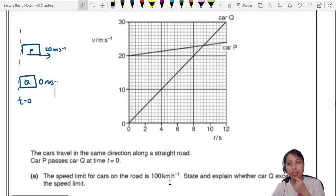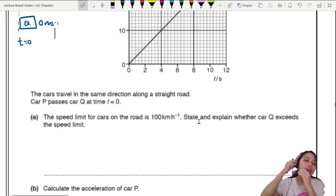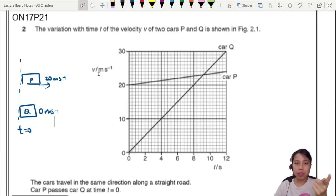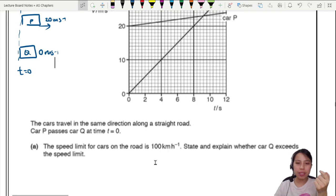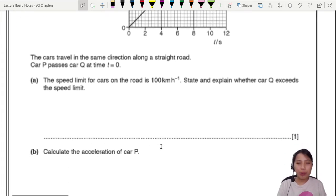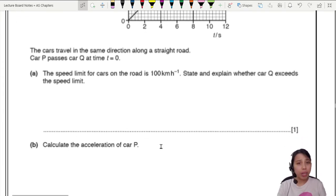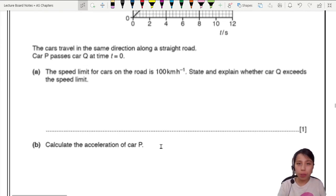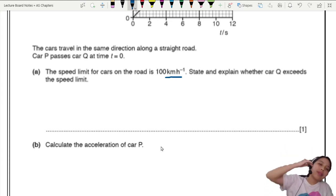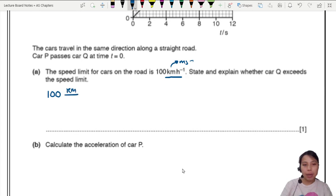But what do we have to find here? In the first part, the speed limit for the cars on the road is 100 kilometers per hour. State and explain whether car Q exceeds the speed limit or not. Wait a second. This velocity is in meters per second. But what they gave us here is 100 kilometers per hour. We need to convert that. How do you convert kilometer per hour to meters per second?